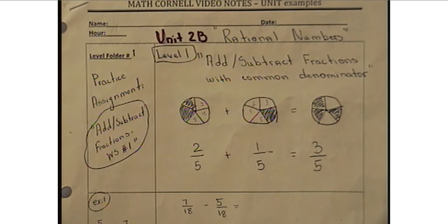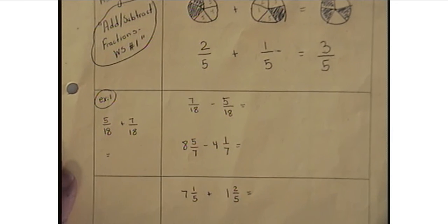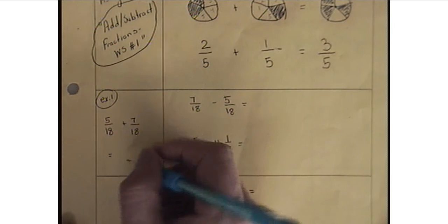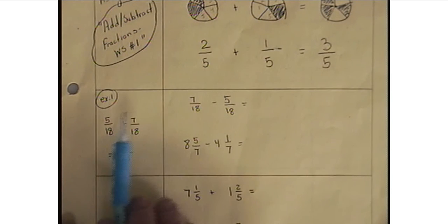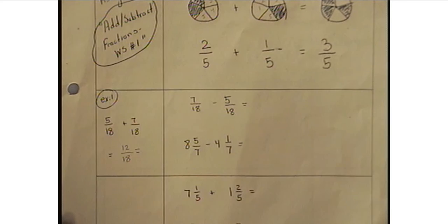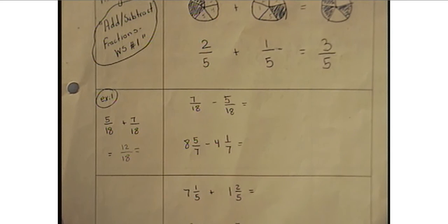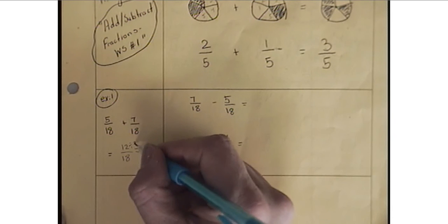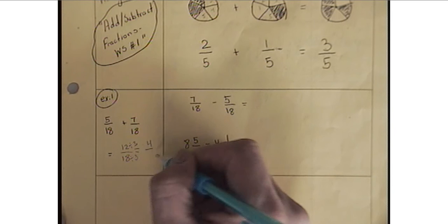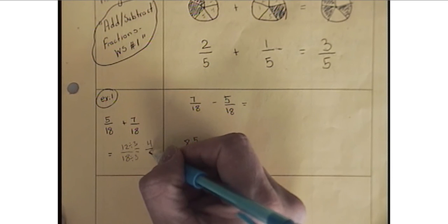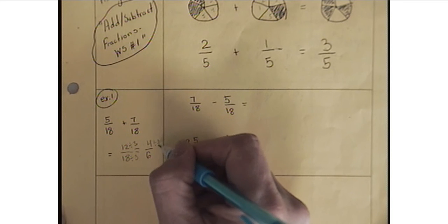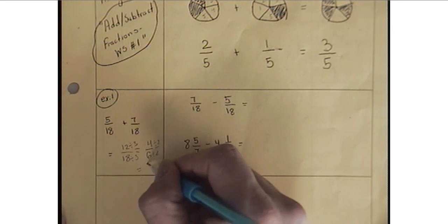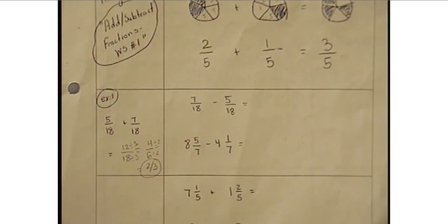Let's go ahead and start with some of the examples and use the solutions and solving them. First example, we have 5/18 plus 7/18. Again, 18 stays in the bottom, 5 plus 7 is 12. Now when you get these numbers, remember we also talk about simplifying fractions, so make sure you simplify as much as you can. So both of those are divisible by 3. 12 by 3 is 4, 18 divided by 3 will be 6. We have another 2 here. So the answer will be 2/3. 2/3 will be the final answer for this example.